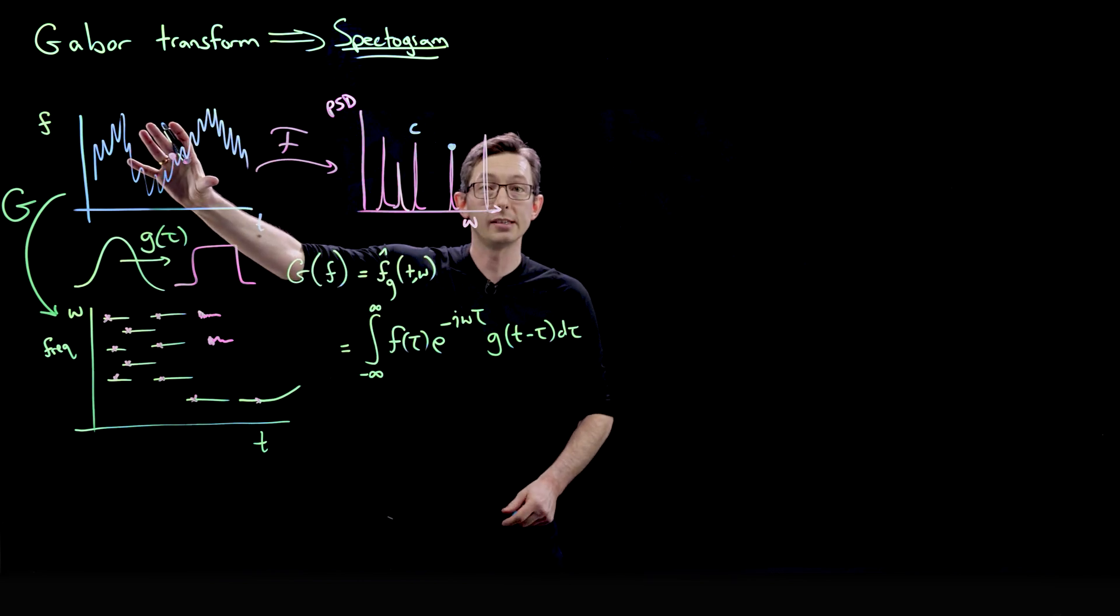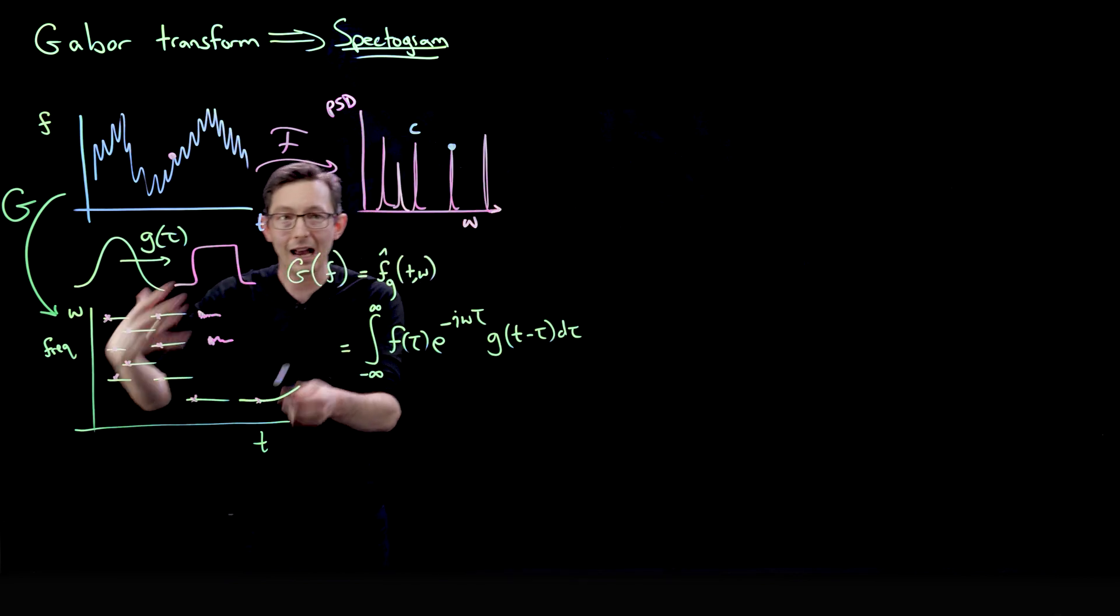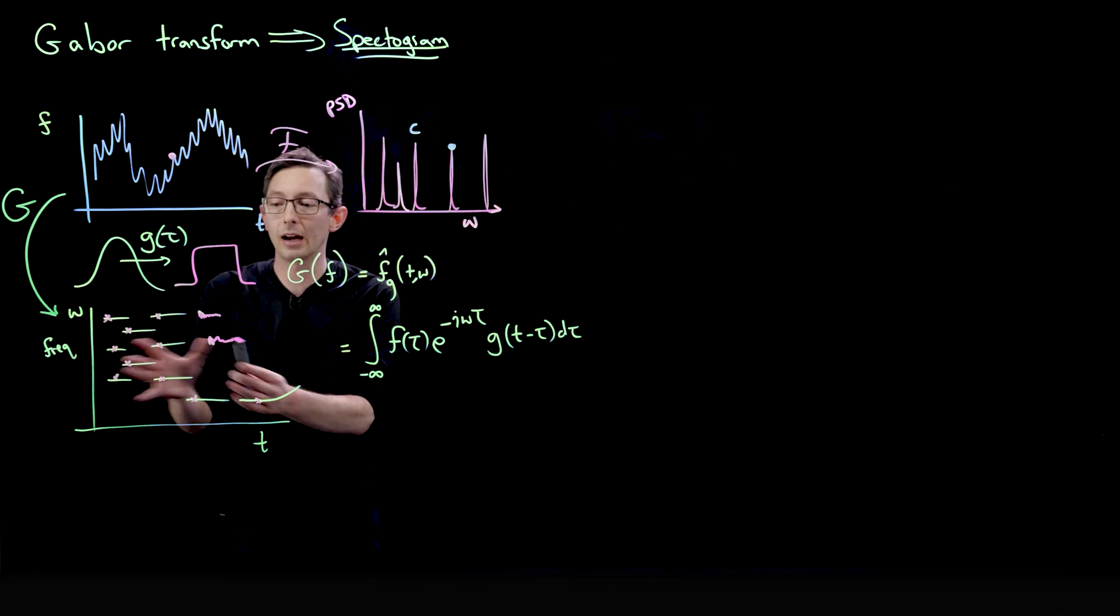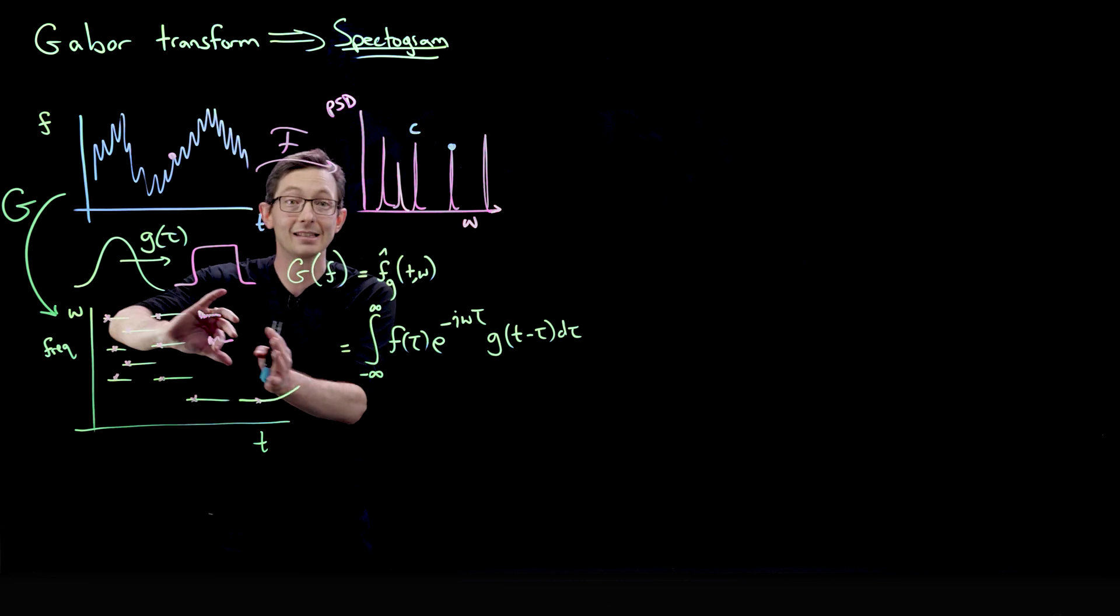So here I have a lot of frequency uncertainty, here I have a lot of temporal uncertainty. And the spectrogram, this time frequency diagram, is going to give you kind of this balance of the two. It tells you what frequencies are active at instances of time.